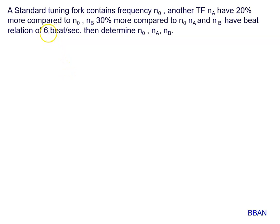A standard tuning fork contains frequency N0. Another tuning fork NA have 20% more compared to N0. Then NA is given by N0 plus 20%, and is 0.2 N0. It means 1.2 N0.